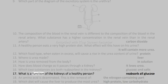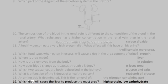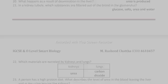17. What is a function of the kidneys of a healthy person? Reabsorb all glucose. 18. An amino acid is deaminated. This is the removal of the nitrogen-containing part. 19. Which diet will cause the liver to produce the most urea? High protein, low carbohydrate. 20. What happens as a result of deamination in the liver? Urea is produced.